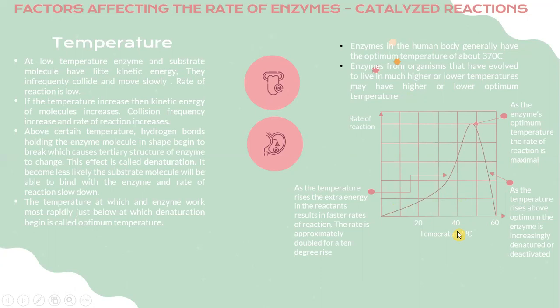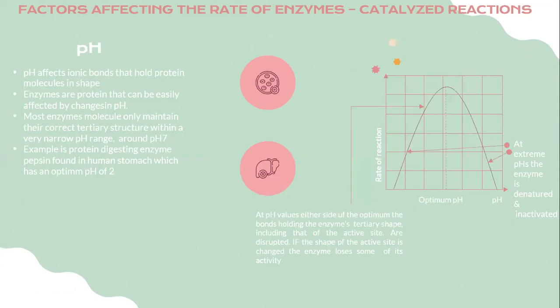The second factor is pH. pH affects the ionic bonds that give protein molecules their shape. Enzymes are proteins that can be easily affected by changes in pH. Most enzyme molecules only maintain the correct tertiary structure within a very narrow pH range, around pH 7. An example is the protein-digesting enzyme pepsin, found in the human stomach, which has an optimum pH of 2.